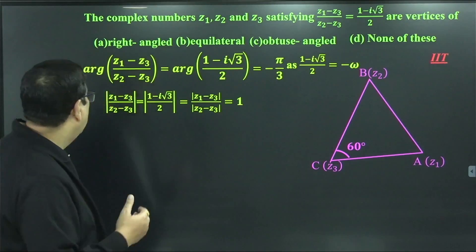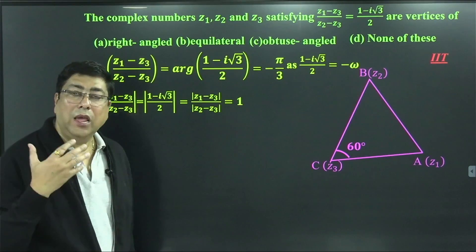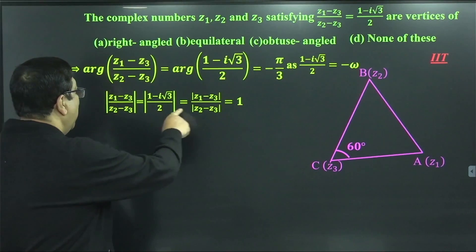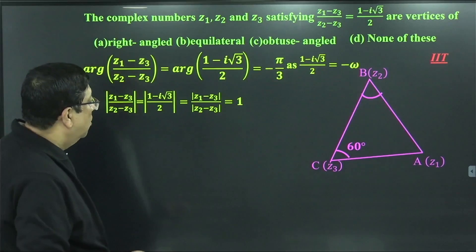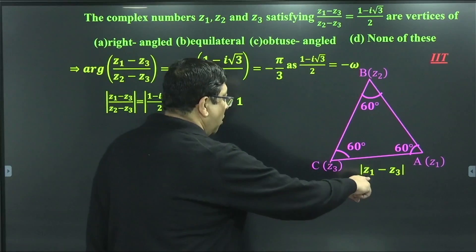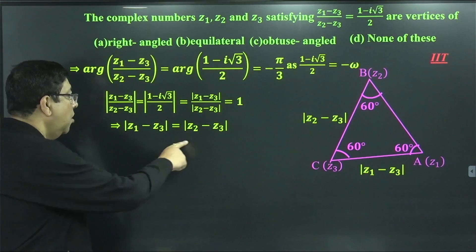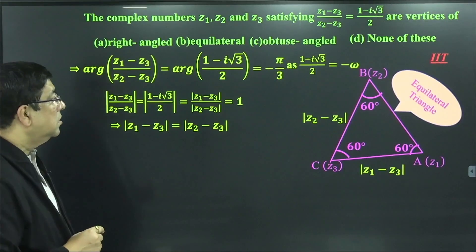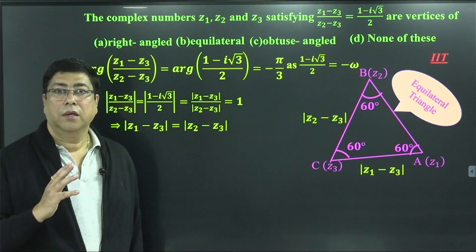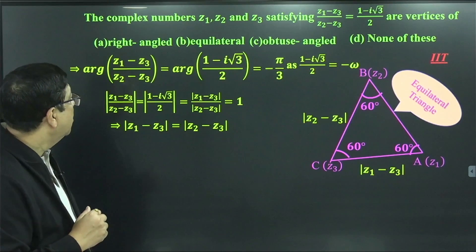Now taking the modulus of both sides, remember that the modulus of any form of omega — whether cube root, fifth root of unity — is always 1. Therefore the modulus value is 1, which means all angles are 60 degrees. Also, |Z1 minus Z3| equals |Z2 minus Z3|, so all sides are equal. Therefore the triangle is equilateral, and the correct option is option B.